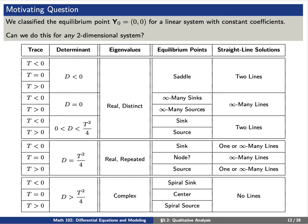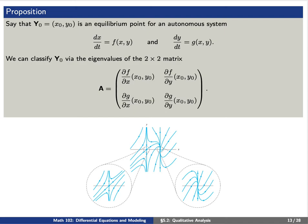Our motivating question is: can we make the same classification for equilibrium points associated to any two-dimensional system? The answer is essentially yes. Say that capital Y-sub-zero is an equilibrium point for an autonomous system dx/dt equals f of x,y and dy/dt equals g of x,y. Then we can classify this equilibrium point via the eigenvalues and eigenvectors of the following two-by-two matrix A: partial of f with respect to x evaluated at the equilibrium point, partial of f with respect to y at that point.